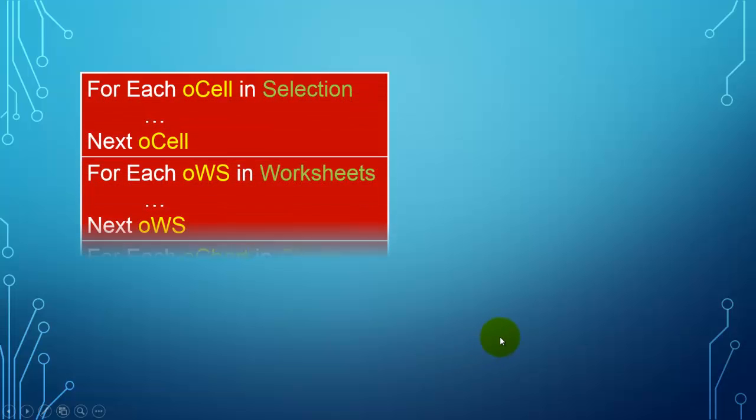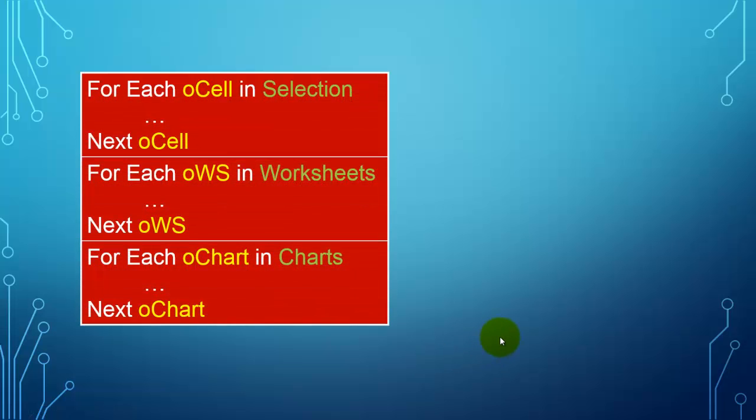So if we want to loop through collections, we go preferably with a For Each loop. We use a variable of the object type. For Each oCell in selection is the collection of all selected cells. And we loop. For Each oWS for instance in the collection of worksheets. For Each oChart in the collection of charts. And we loop.